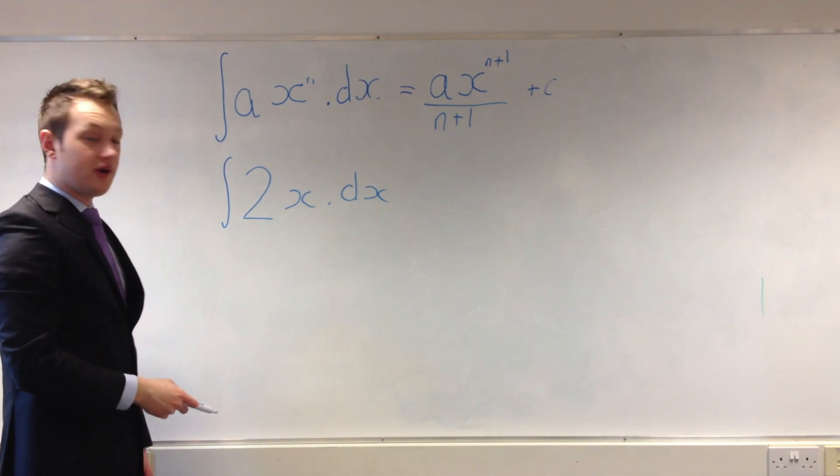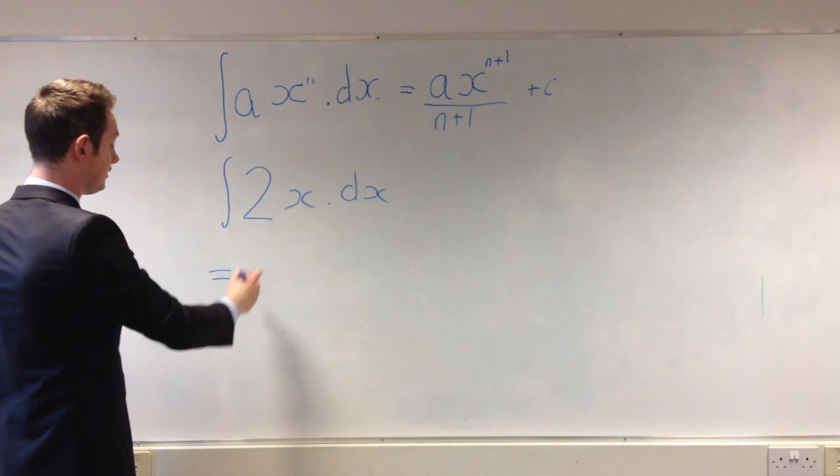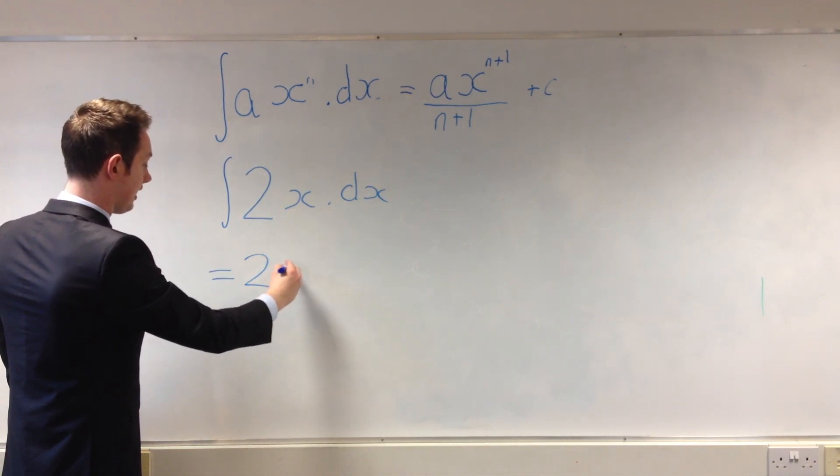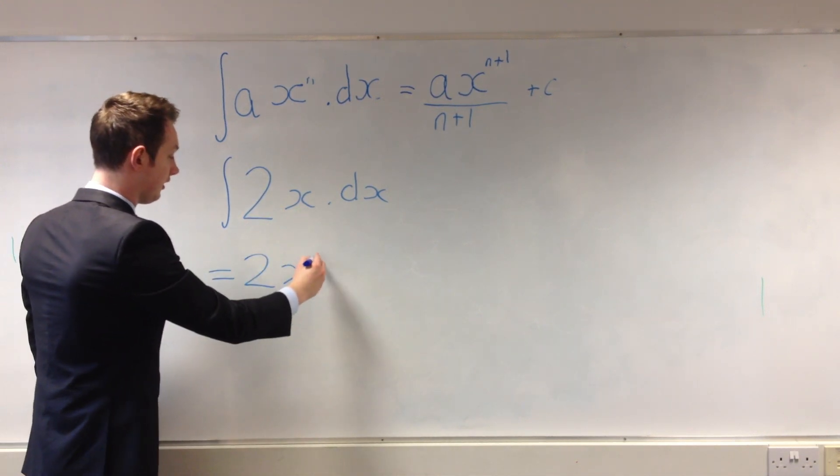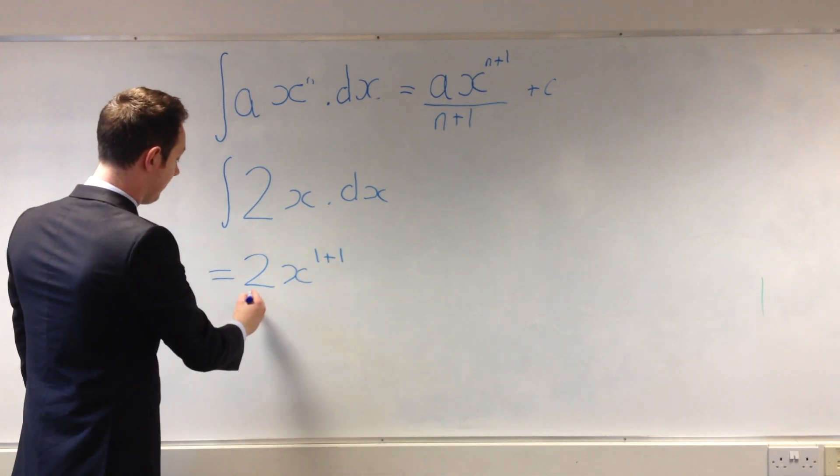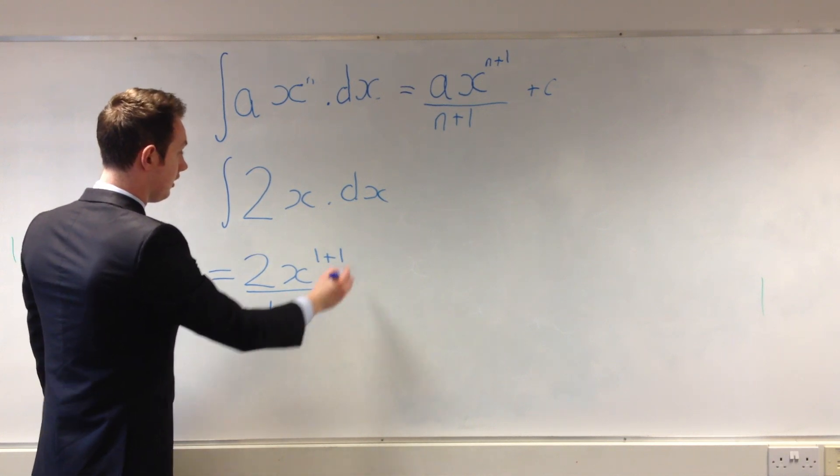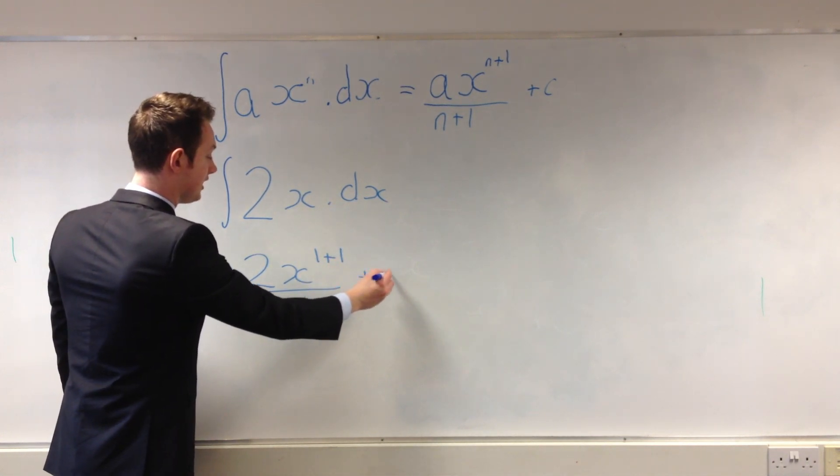Now the first thing we do is we add one to the power. So we take 2x and we go 1 plus 1. We divide by this new power here. And then we add c.